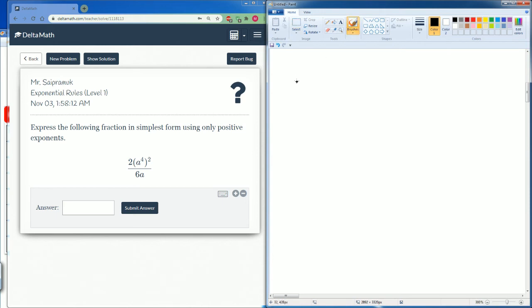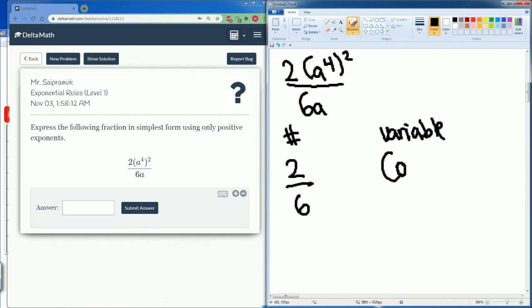Here we have 2a to the fourth to the second power divided by 6a. Separate this by the number. So it's just 2 divided by 6. I just pull out the numbers and the variable is on the other side. a fourth to the second power divided by a.